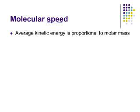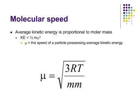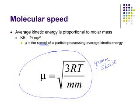Let's talk about molecular speed. The average kinetic energy of a particle is proportional to its molar mass. They are related. The kinetic energy is equal to one-half times the mass times the velocity squared. We're using this letter mu to represent the speed of a particle containing the average kinetic energy. If you look on your green sheet, this equation is on there saying that the speed of a particle having the average kinetic energy can be calculated by taking three times r times t over the molar mass, and then taking the square root of the whole thing. You can actually calculate the speed of a particle with the average kinetic energy.